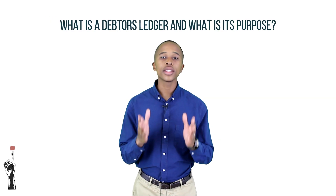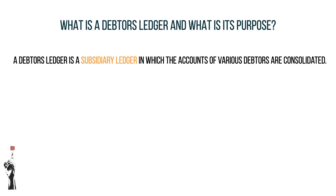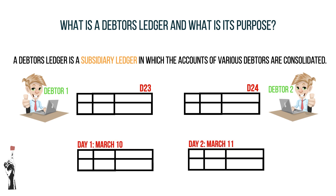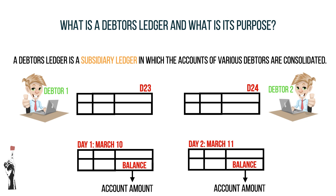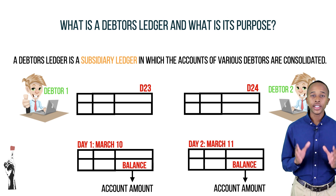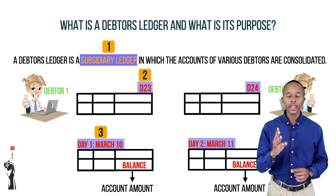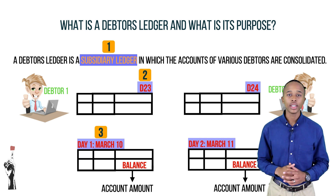So what is a debtor's ledger and what is its purpose? A debtor's ledger is a subsidiary ledger in which the accounts of various debtors are consolidated. Each debtor gets a unique number and the details of each transaction with the debtor are recorded in this ledger. Transactions are posted daily so that each day the account shows the precise amount that is outstanding — the balance. This means if a debtor comes into your shop at any given time and wants to pay their account, the business will be able to quickly give an accurate amount.